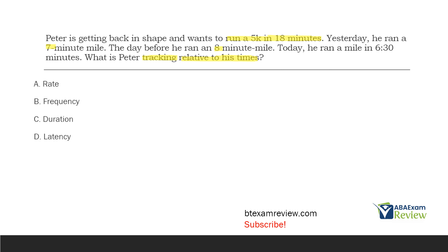He's looking at a seven-minute mile, an eight-minute mile, and a six-and-a-half-minute mile — he's looking at total time. B: frequency — if we don't have rate, we don't have frequency. C: duration — yes, he's looking at duration. Duration is the length of a response. Each mile is our response: eight-minute mile duration, seven-minute mile duration, six-and-a-half-minute duration. Peter is tracking duration relative to his time. D: latency is just the time between the SD and the response — we're not tracking that. We're tracking the total length of time each response is taking, so Peter is tracking duration.